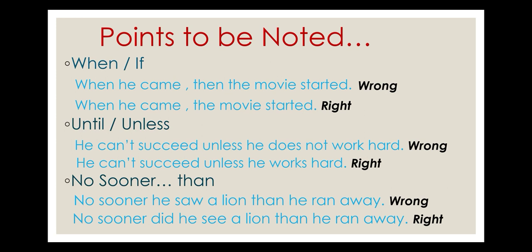The next pair to note is 'until' and 'unless.' These conjunctions already convey a negative meaning, so there is no need to use 'not', 'does not', 'did not', etc. after them. For example: 'He can't succeed unless he does not work hard' is wrong. The correct sentence is: 'He can't succeed unless he works hard.'